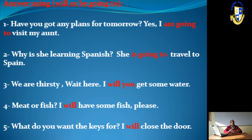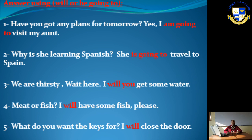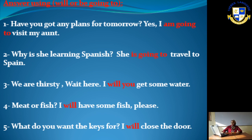Question three: 'We are thirsty now' — is there a plan to get water? No! So: 'Wait here, I will get you some water.' Question four: 'Meat or fish?' — you're asked right now, no prior plan — 'I will have some fish, please.'